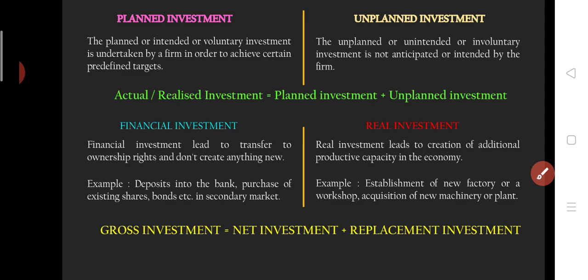Then planned investment and unplanned investment. Planned means it is voluntary, intended investment — for example, if I am going to expand my factory or purchase a new firm, that is planned investment. Unplanned means unintended and involuntary — for example, if an infrastructure becomes destroyed or any machine breaks down, the investment you make to correct that mishap is unplanned investment.